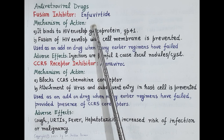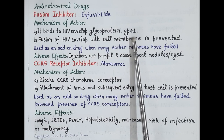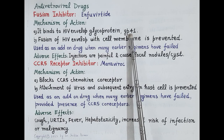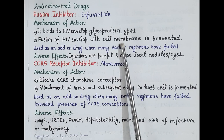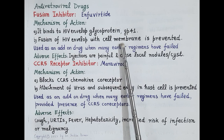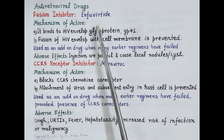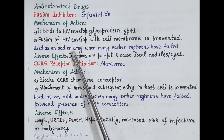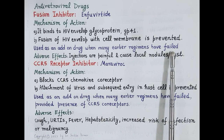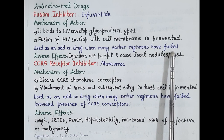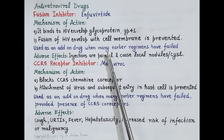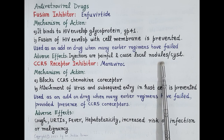Another antiretroviral drug is enfuvirtide. As we have already studied, glycoprotein 41 on the viral envelope mediates fusion of the virus with the host cell membrane. Enfuvirtide binds to glycoprotein 41 and thereby prevents fusion of the HIV envelope with the host cell membrane — making it a fusion inhibitor. Enfuvirtide is used as an add-on drug, added to a particular anti-HIV regimen only in selected patients where many earlier regimens have already failed. This drug is given by subcutaneous injection; these injections are painful and can cause local nodules or cysts.